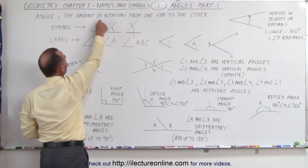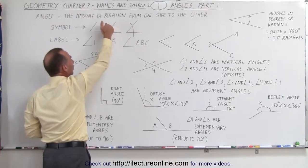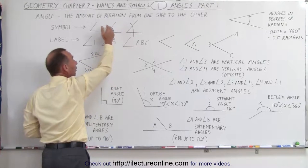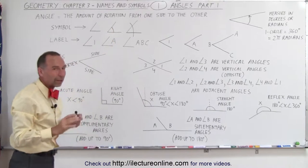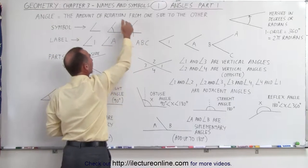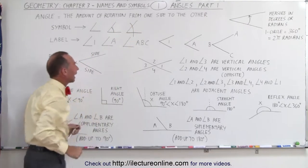So here we can symbolize it like this. Sometimes we symbolize it with a little arch in between the two sides. Sometimes we use one arch, two arches, or three arches depending upon how we want to compare angles to one another. And sometimes we simply draw a curved line through the two sides like that.